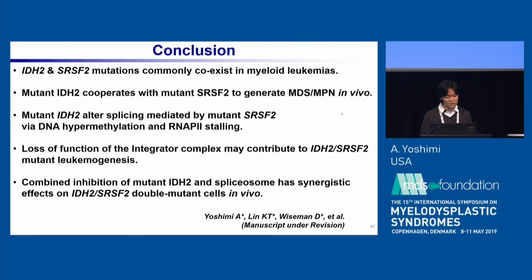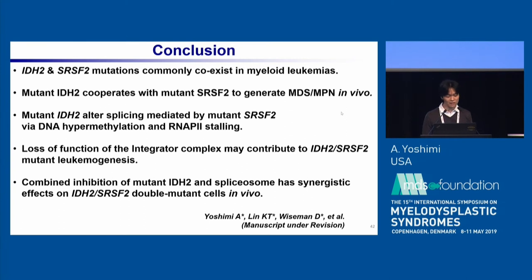In conclusion, IDH2 and SRSF2 mutations commonly coexist in myeloid leukemia. Mutant IDH2 cooperates with mutant SRSF2 to generate MDS-MPN in vivo. Mutant IDH2 augments aberrant splicing mediated by mutant SRSF2 via DNA hypermethylation and RNA Pol II stalling. Loss of function of the Integrator complex may contribute to IDH2 mutant leukemogenesis. Combined inhibition of mutant IDH2 and the spliceosome has a synergistic effect on IDH2/SRSF2 double mutant cells in vivo.